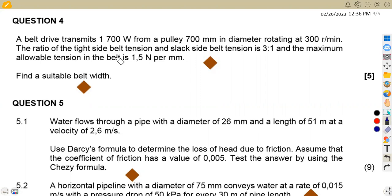So we are given question number four, where we've got a belt drive transmits 1,700 watts from a pulley which is 700 millimeters in diameter, rotating at 300 revs per minute. The ratio of the tight side tension and the slack side belt tension is 3 to 1, and the maximum allowable tension in the belt is 1.5 Newton per millimeter. Take note, we are given per millimeter, which means per given width.